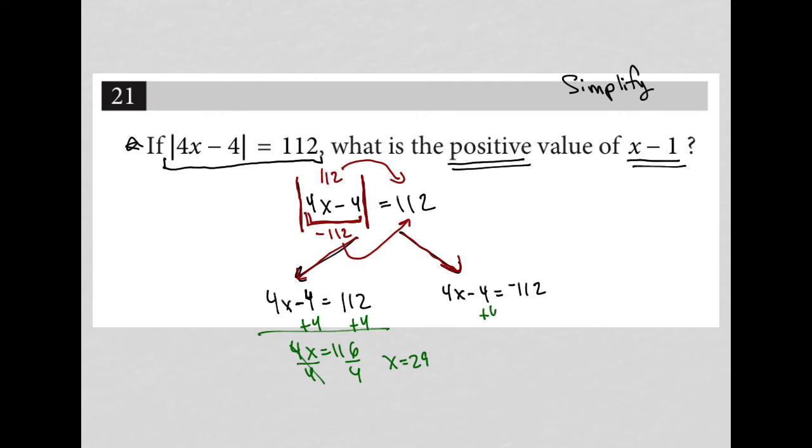And in this case, I add 4. And realistically, I'm not going to even continue solving this one. The reason being that I want the positive value of x minus 1. This is going to give me x is a negative number.